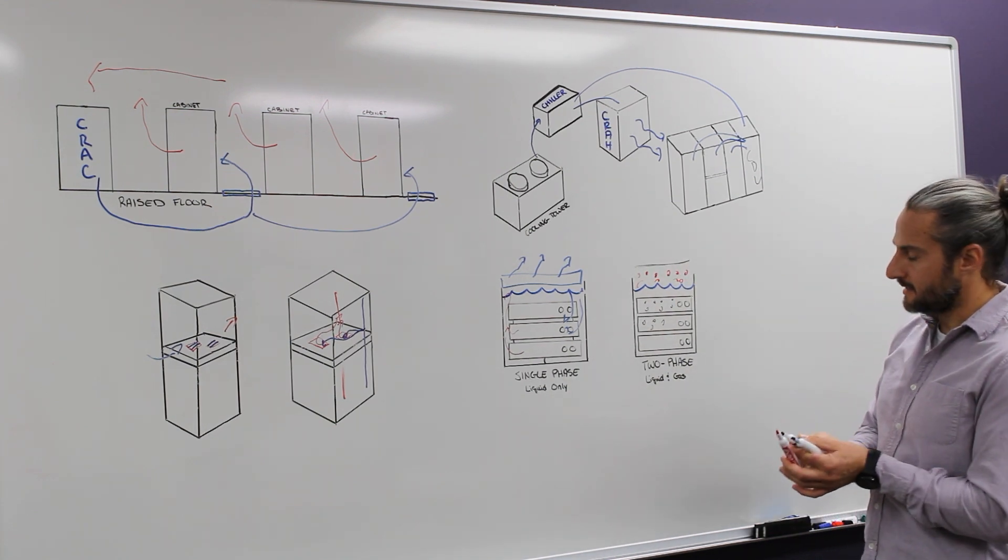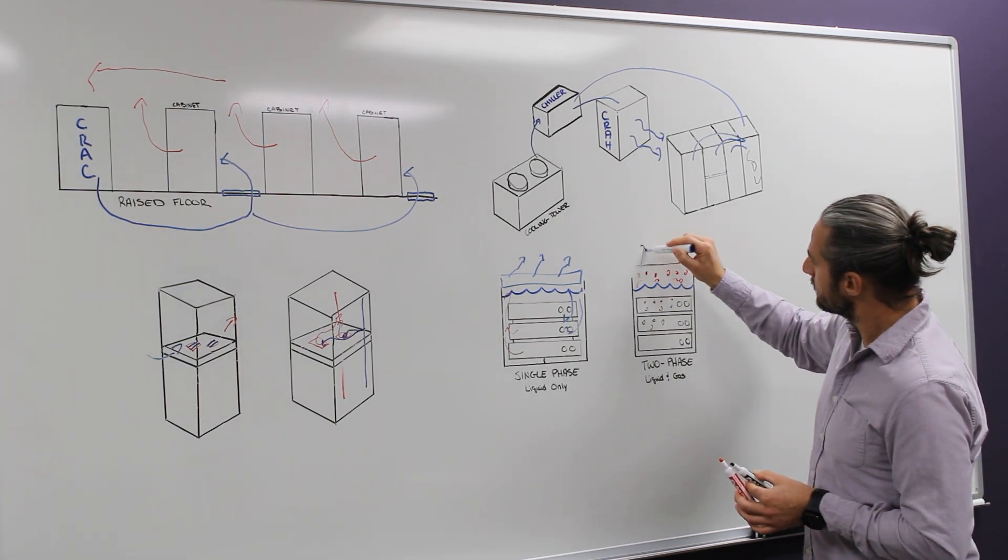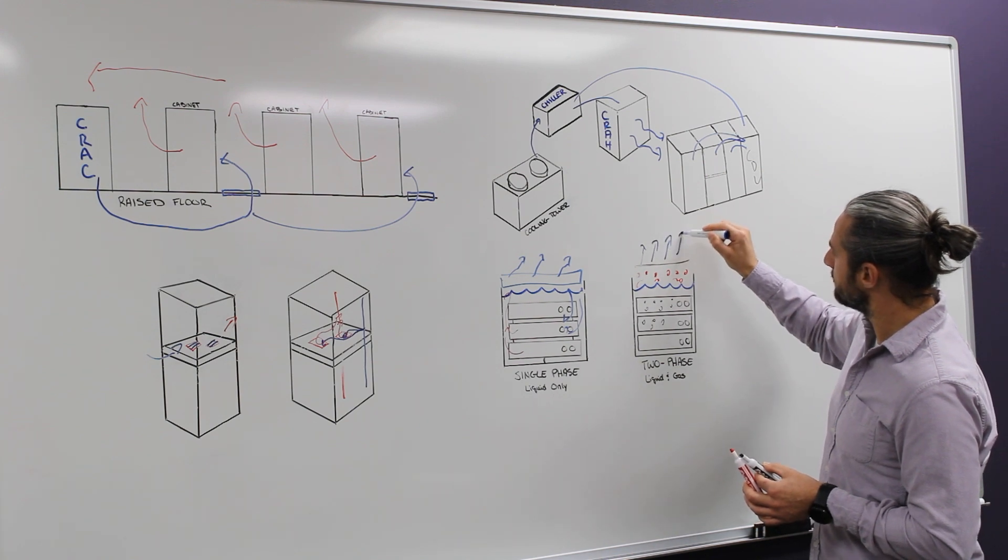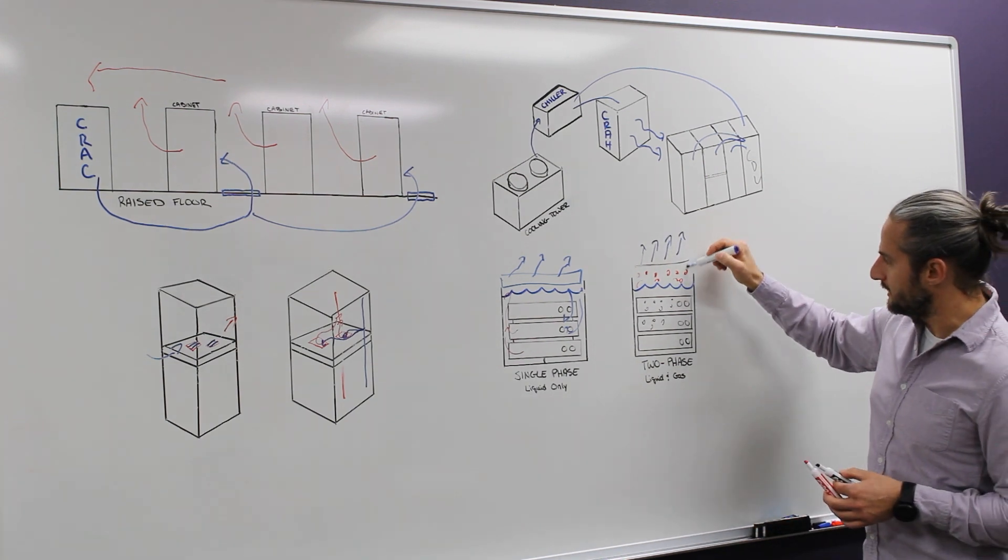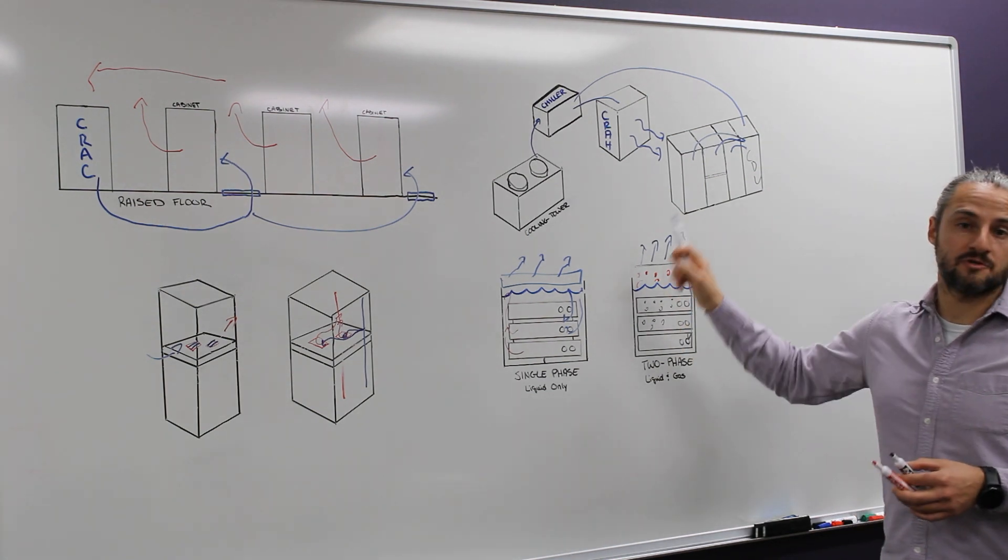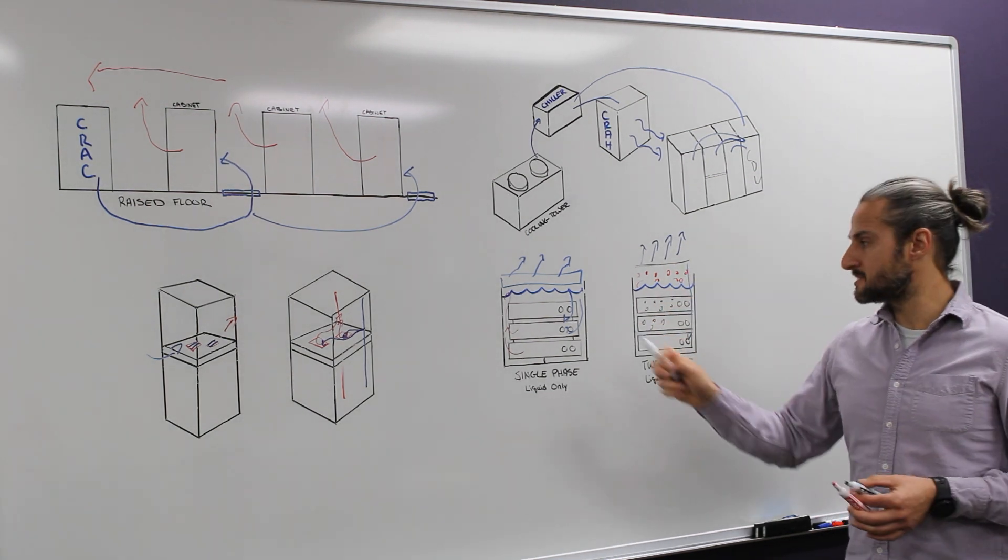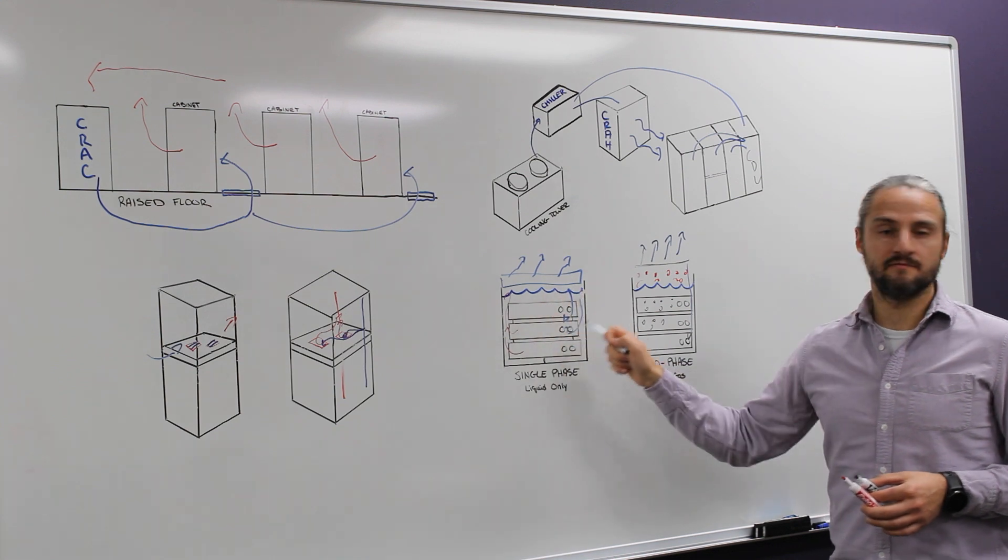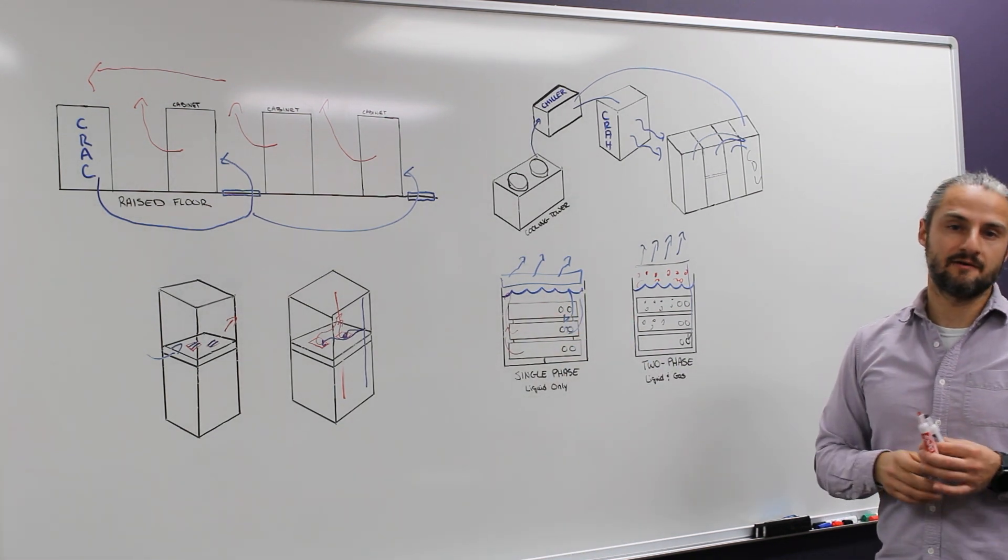and then you reject that heat from the top. Those vapor bubbles condense, fall back down, and you have this natural circulation, but now you have liquid and vapor instead of just the density difference of the single-phase liquid circulating around the cabinet.